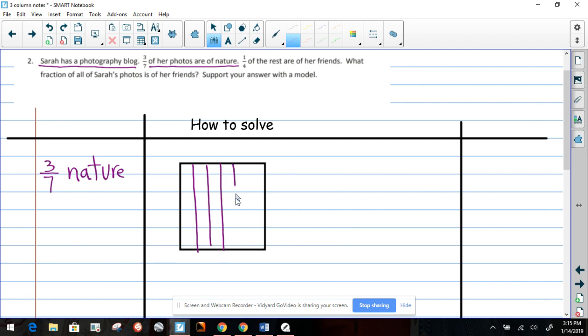One, two, three, four, five, six, seven parts. And three of them are shaded. So we're going to do one, two, and three shaded. Okay, now. So these are three-sevenths and this is nature.